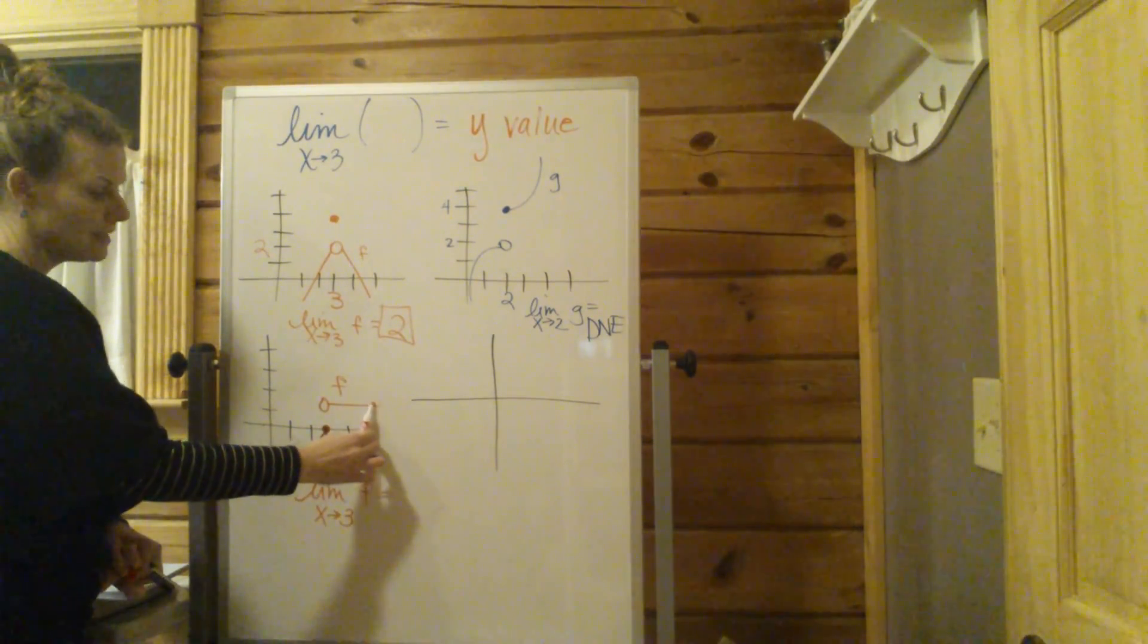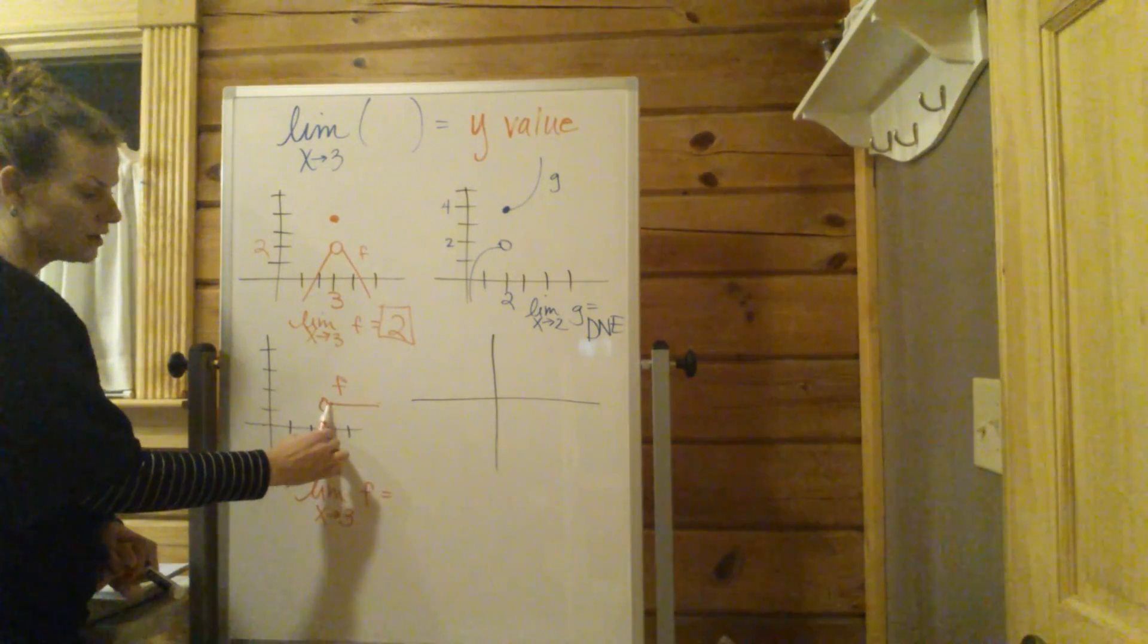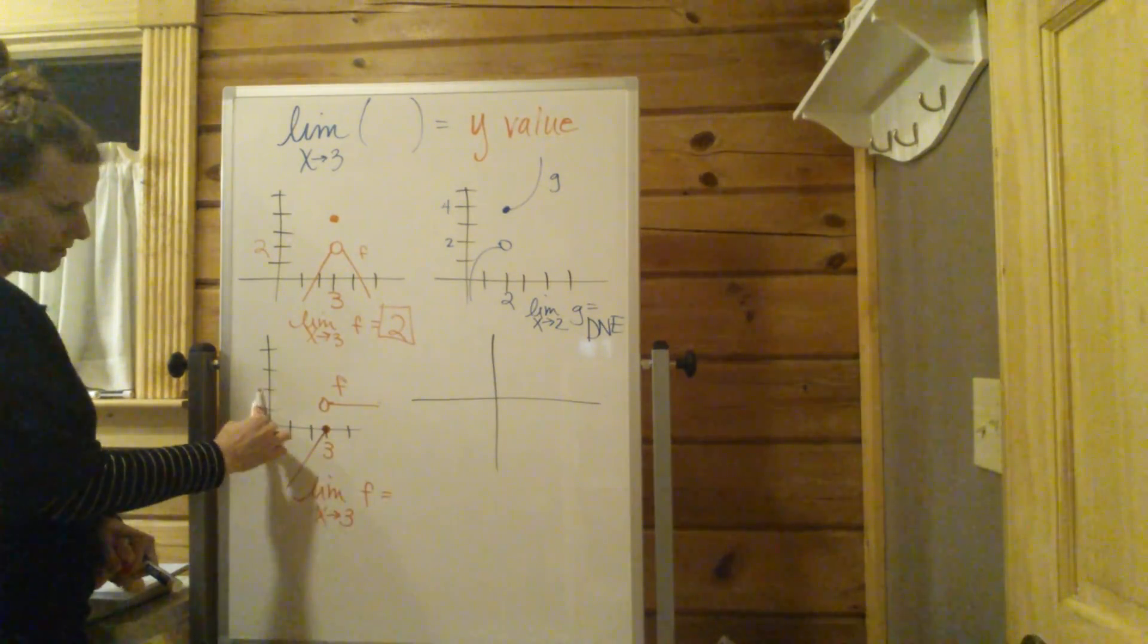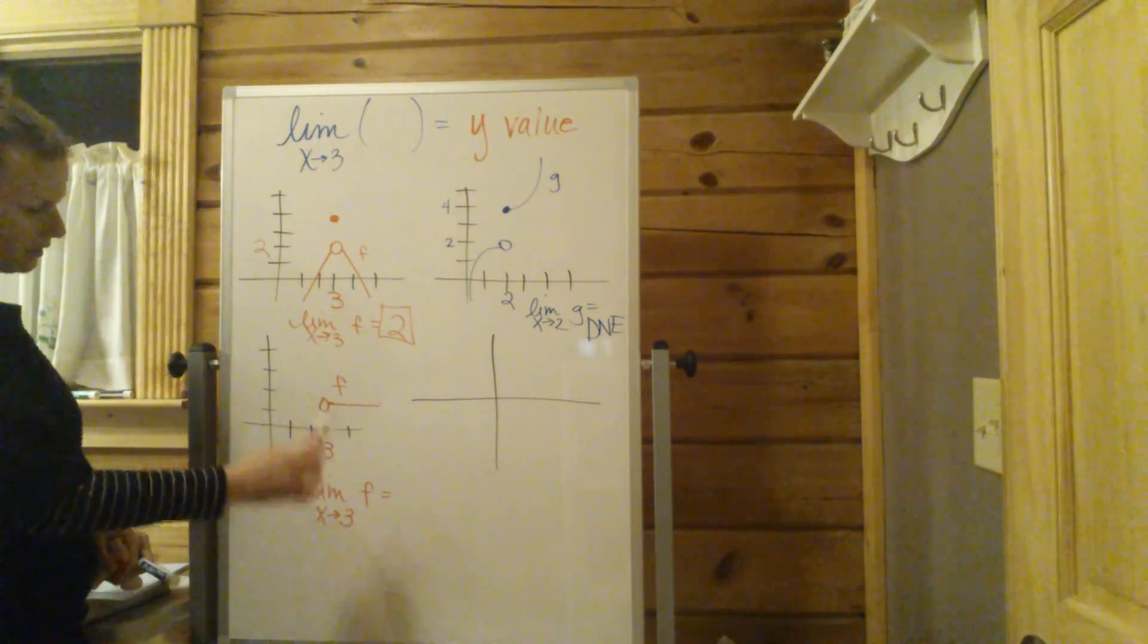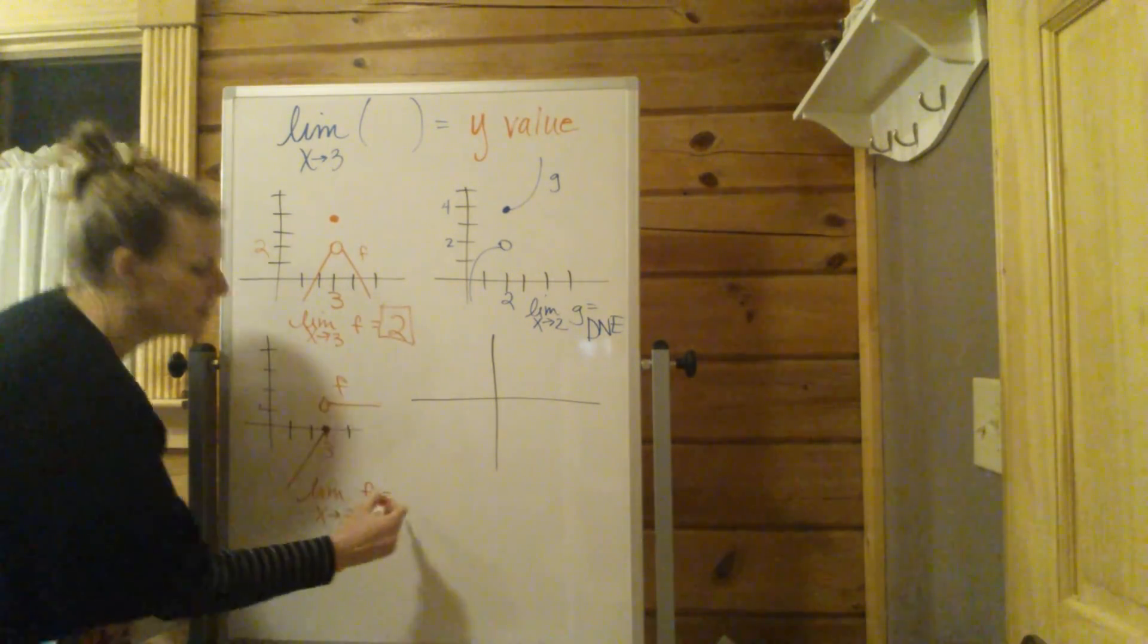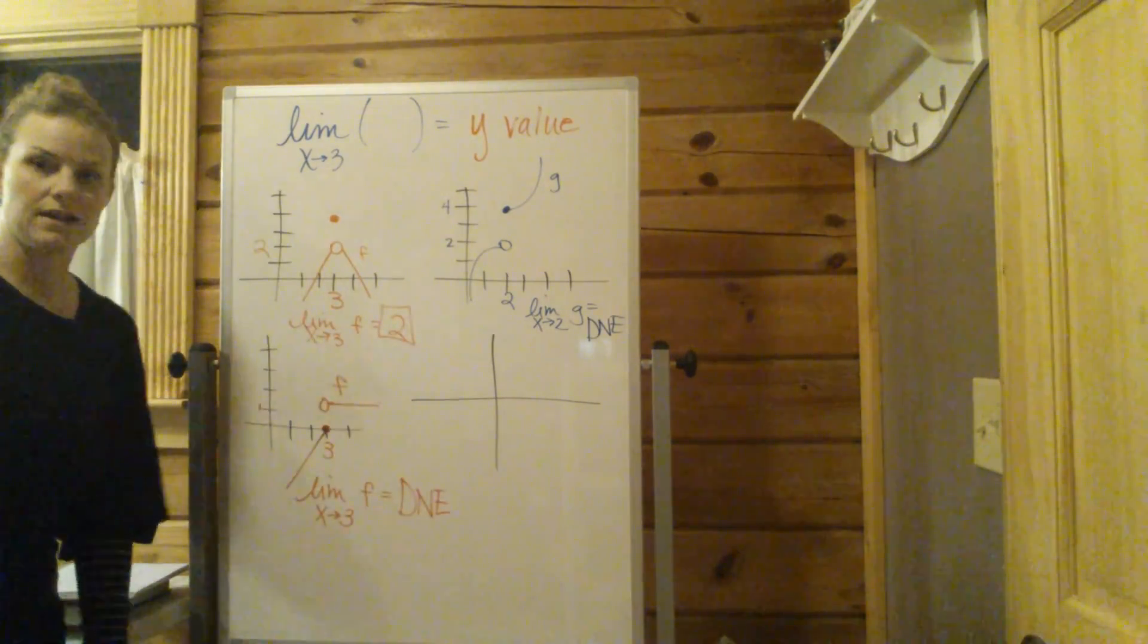But from the right, as x is approaching 3, the y values are staying constant, actually. But the y values are always, it looks like 1 here. So there's 1 from the right, but 0 from the left means the limit does not exist.